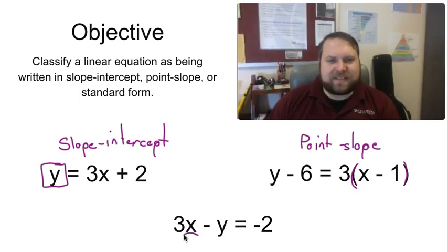And finally here we see that x and y are on the same side of the equation, both have coefficients 3 and negative 1, and we have a constant term, just a number on the other side, so this one must be standard form.